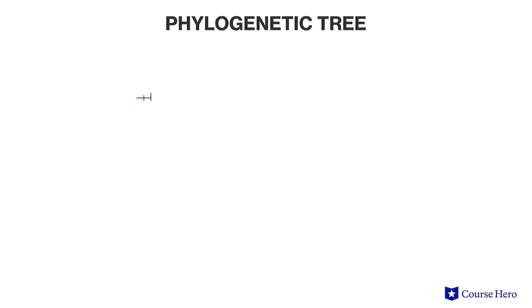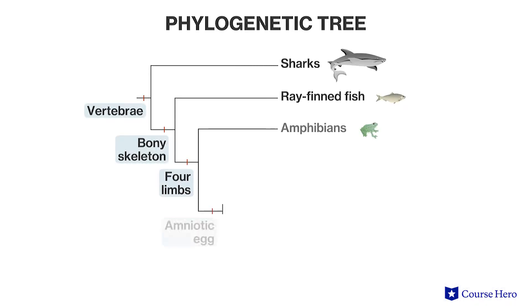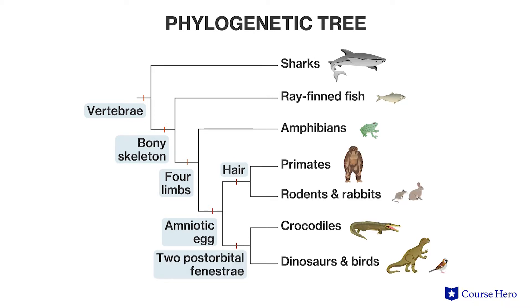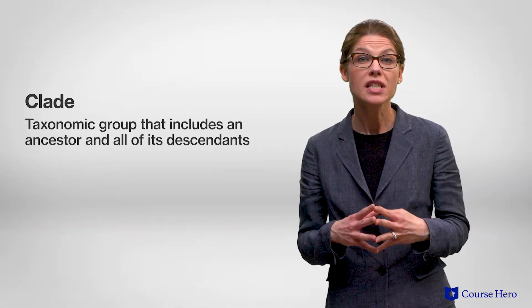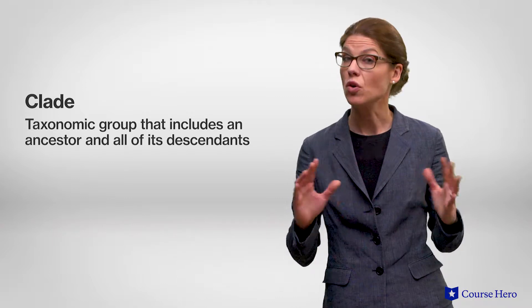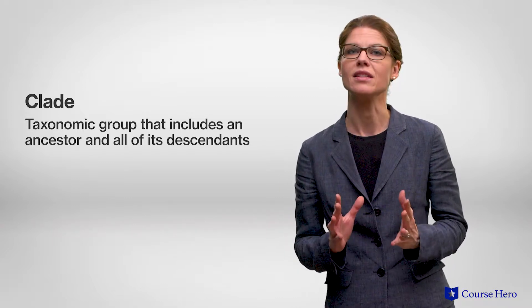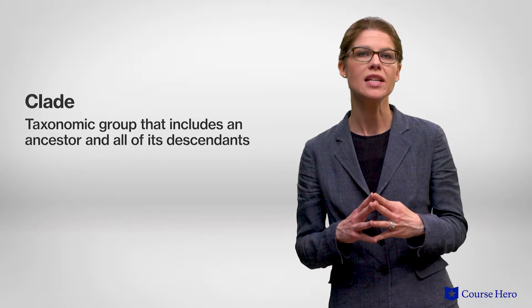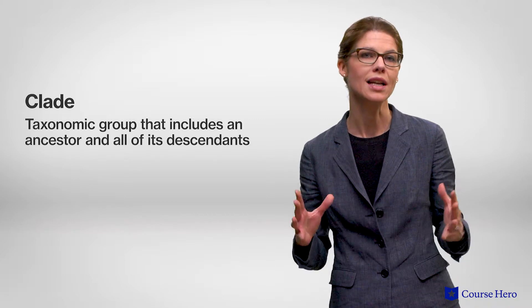A phylogenetic tree can be built to show relatedness among any number of species or other taxonomic groups. These diagrams are constructed using shared characteristics among the groups. A group of organisms that consists of a common ancestor and all its descendants is represented by a single branch on the tree of life, and is called a clade.